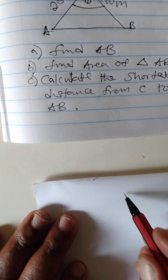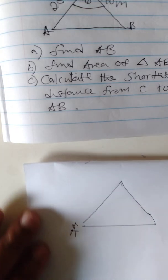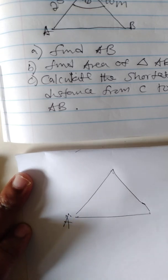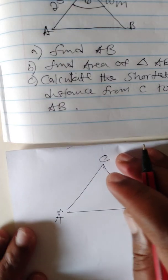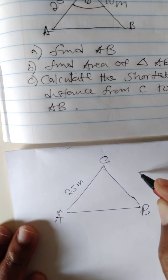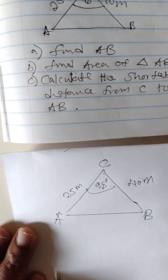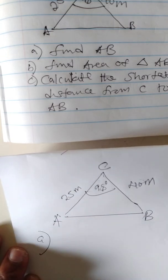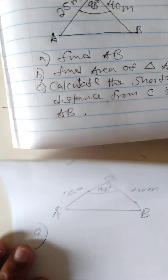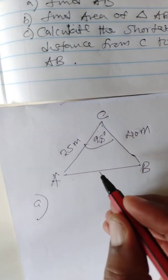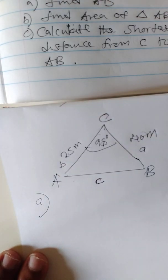We have triangle ABC. This side is 25 meters and this other side is 40 meters, and the angle is 98 degrees. The first question asks us to find AB. When you look at this, you realize that side AB is side c, this side is a, and this is side b. So indirectly we are asked to find side c.